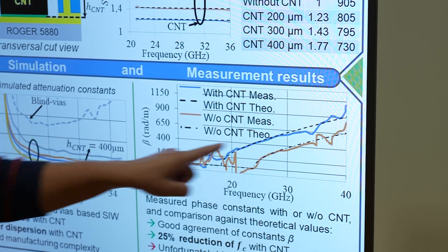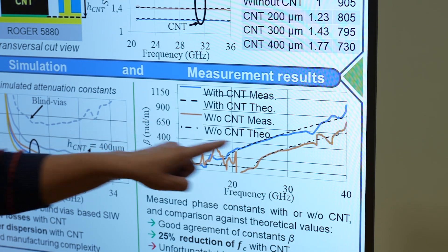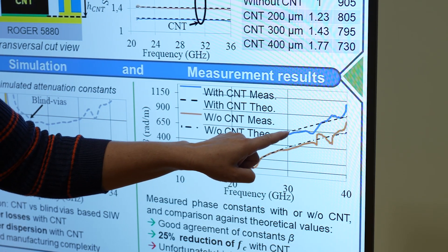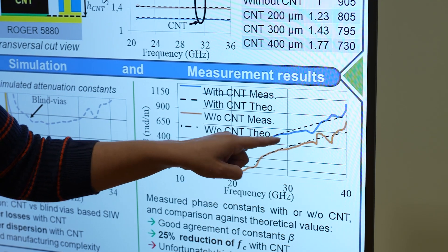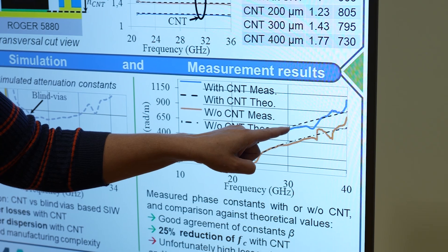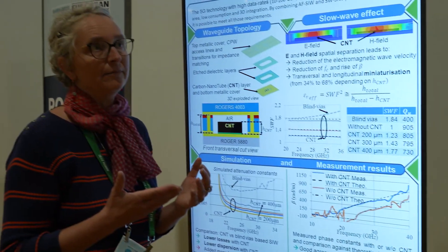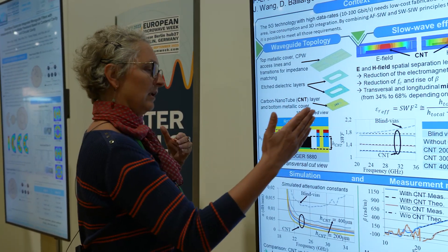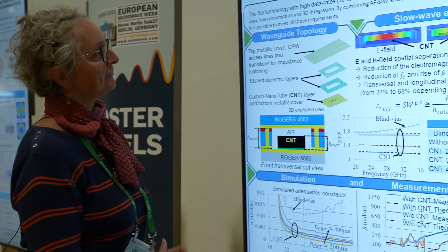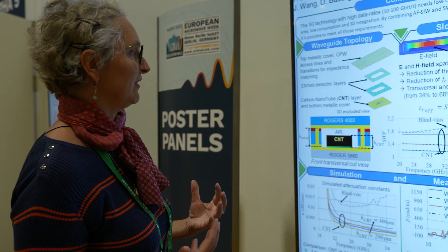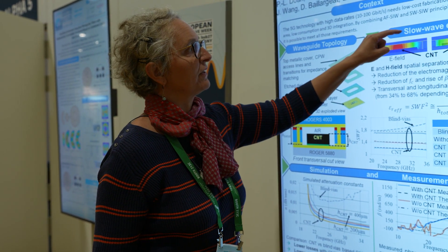Here we have a phase constant beta in radians per meter that is higher with the slow-wave effect than without. Higher phase constant means lower lambda, and so a shorter length and also shorter width. The idea of the work is to know how to reach slow-wave effect.